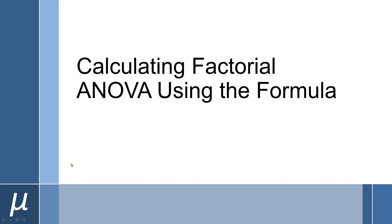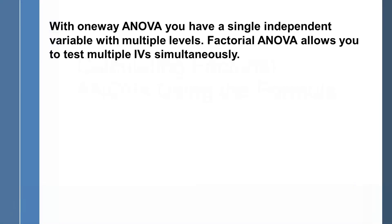In this video, I'll demonstrate how to calculate factorial ANOVA using formulas. With one-way ANOVA, you have a single independent variable with multiple levels, anywhere from two to an unlimited number. They all have to be lined up in the same direction — that's why it's called a one-way ANOVA. Factorial ANOVA allows you to test multiple independent variables simultaneously.